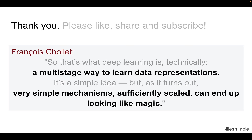Before ending this video, I'd like to leave you with this note from François Chollet: deep learning is essentially a multi-stage way to learn data representations. As you'll see in upcoming videos, very simple mechanisms — like updating the weights of each layer — can bring predicted values progressively closer to the true values. If you iterate that loop of updating weights and reducing the loss score, you can solve pretty complex problems. That's why he says that very simple mechanisms, sufficiently scaled up, can end up looking like magic.